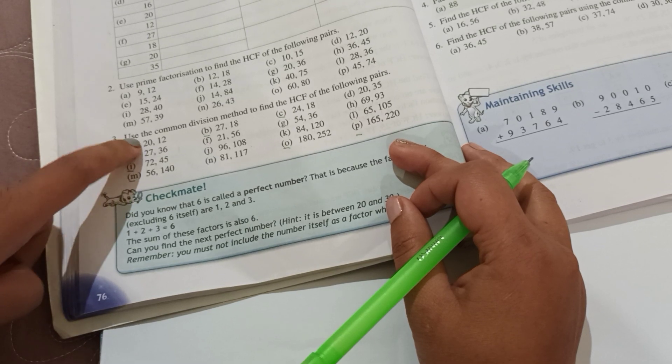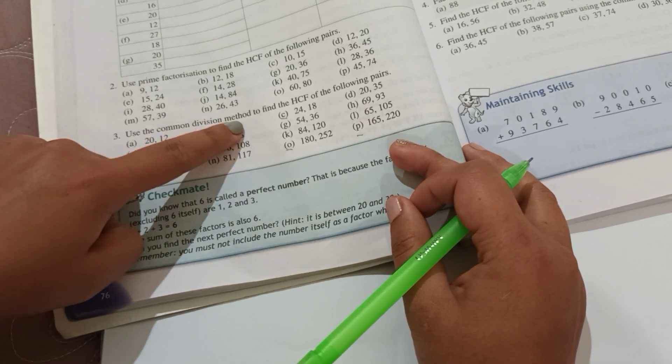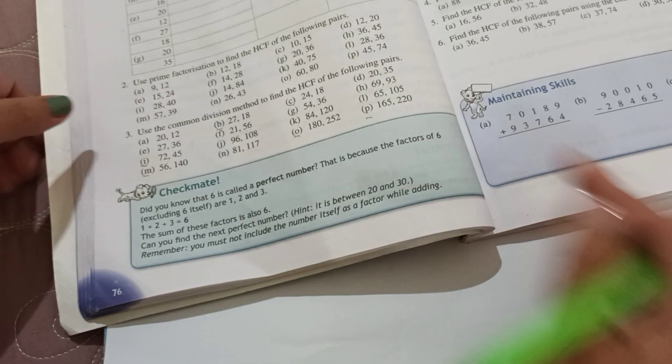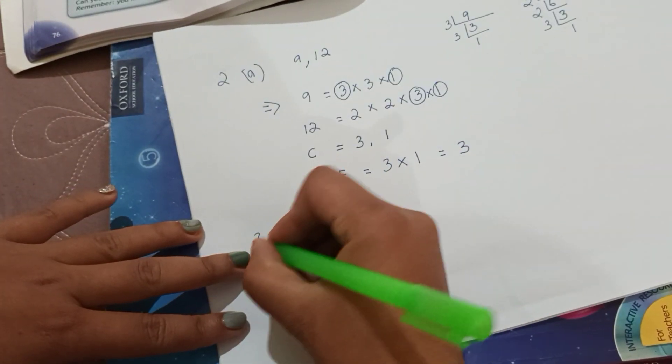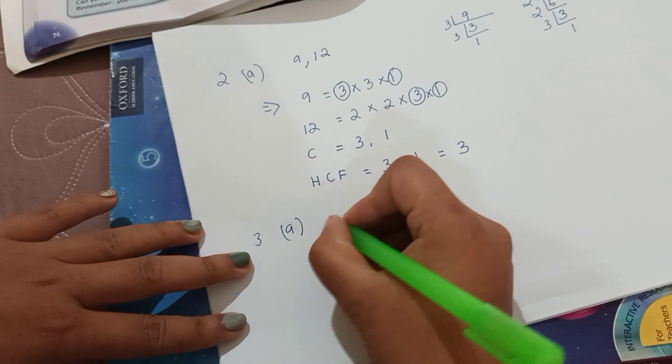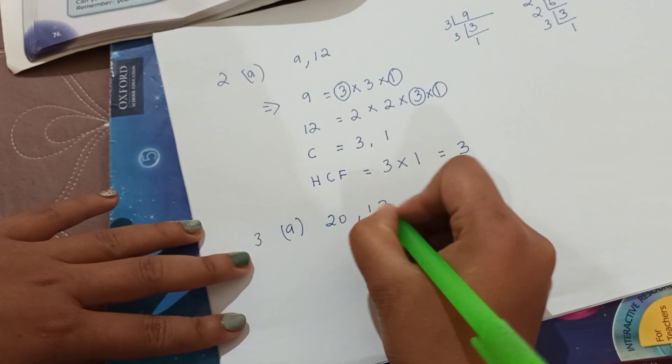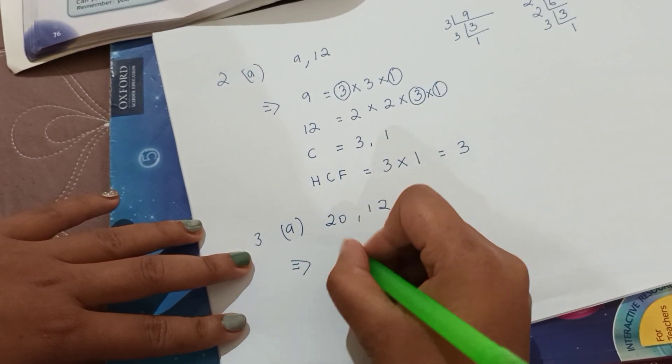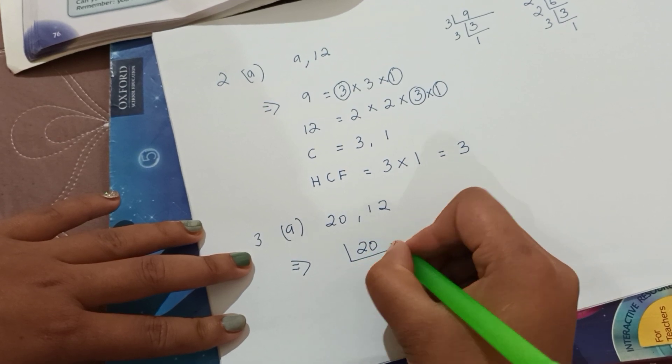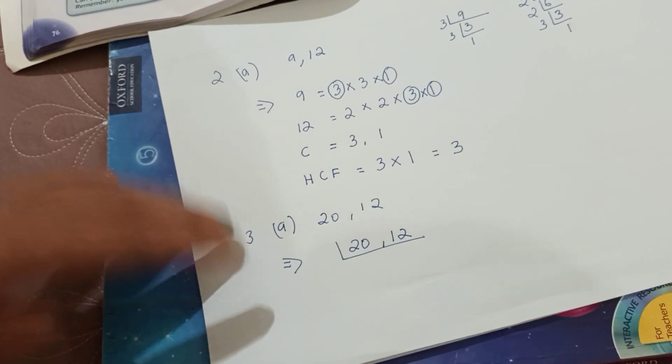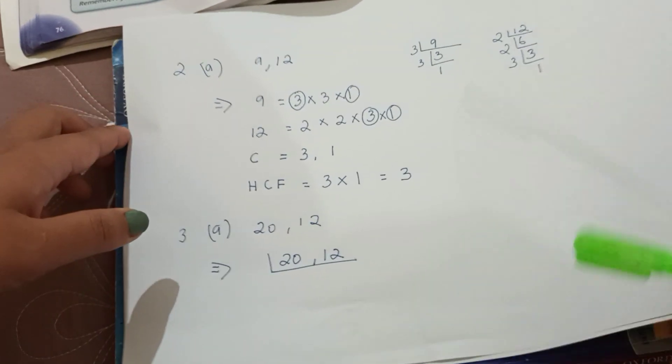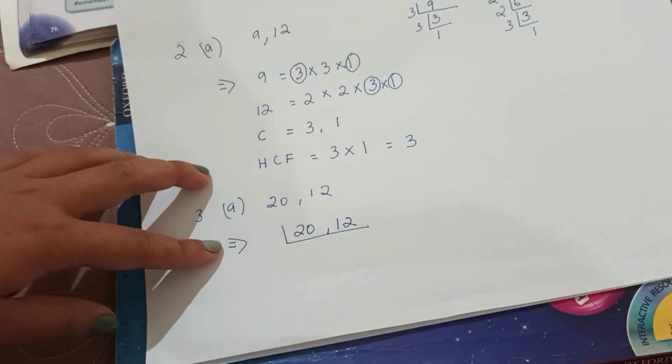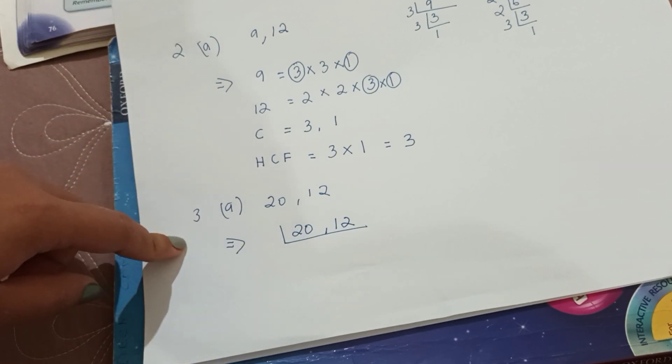Question number 3, use common division method. Common division method, we have 20 and 12. Common division method, you write the numbers together. You need to find the smallest number that can divide both numbers.